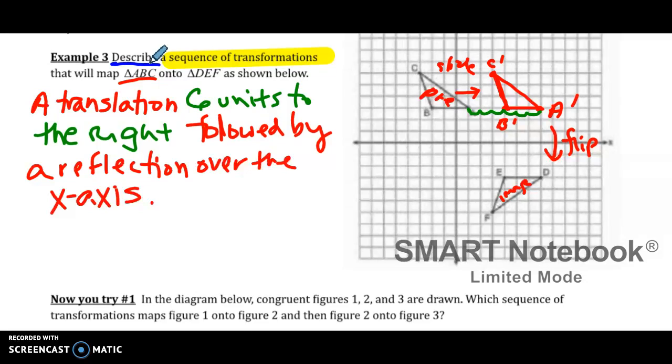Could I have said ABC, we should maybe finish this, will map triangle ABC onto triangle DEF. Could I have said that if we reflect triangle ABC over the x-axis and translate it six units to the right, that would still be absolutely correct.